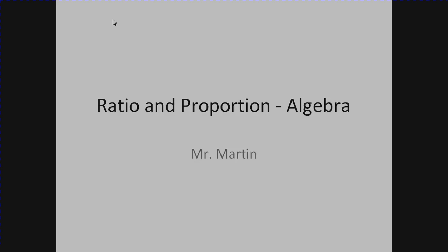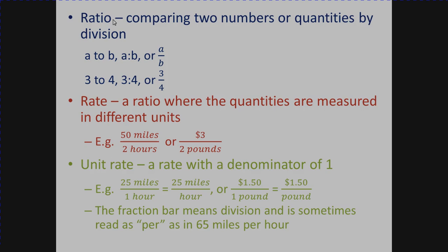To start, write down what a ratio is. A ratio is comparing two numbers or quantities by division. For example, I can compare three to four. I can represent it as 'a to b', 'a:b', or 'a over b' using variables, or with numbers: three to four, three colon four, or three over four — three fourths. Ratios are also fractions, comparing one number to another by division.